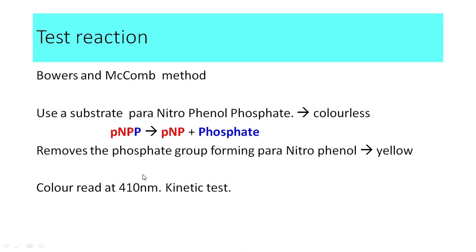This is a kinetic test, in which the color is progressively produced as the reaction proceeds. Therefore, the graph obtained for alkaline phosphatase is a rising graph. This is important to remember — when we discussed AST and ALT, the graph was a decreasing graph. For alkaline phosphatase, as the reaction occurs, more and more para-nitrophenol is produced, which is yellow in color, and so the yellow color increases over time, giving a rising graph.